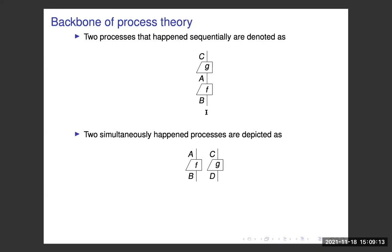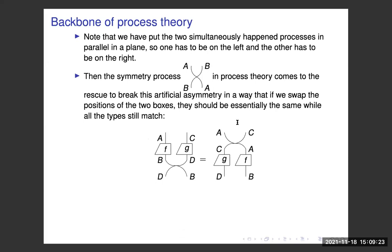That's the general operational meaning for composition of processes. Since we write diagrams in a plane, for two simultaneously happening processes we have to put one on the left and the other on the right. But this is an artificial symmetry — why not the other way? So we need a symmetry process, a swap, to break this artificial symmetry.